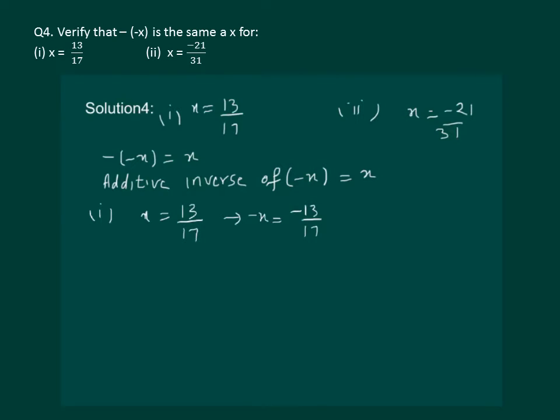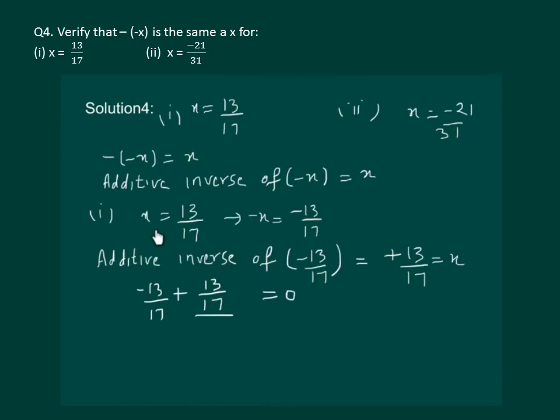Now we have to find additive inverse of minus 13 by 17. That means we have to find a number such that minus 13 by 17 plus the number gives us 0. Clearly, 13 by 17 is the number. That means that additive inverse of minus 13 by 17 is equal to plus 13 by 17 and which is equal to x given in the question. And hence verified that minus of minus x is equal to x.